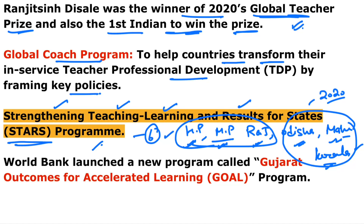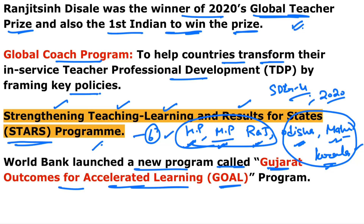This is in line with the Sustainable Development Goal for Education, which is SDG 4. In March 2021, the World Bank also launched the GOAL program — Gujarat Outcomes for Accelerated Learning — which is part of the STARS program with special focus on Gujarat. It aims to enhance classroom teaching practices and introduce multiple channels for teacher learning. The World Bank is headquartered in Washington DC, USA, was founded in 1944, and has 189 member countries. Its president is David Malpass.